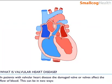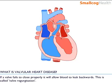In patients with valvular heart disease, the damaged valve or valves affect the flow of blood. This can be in two ways. If a valve fails to close properly, it will allow blood to leak backwards. This is called valve regurgitation.